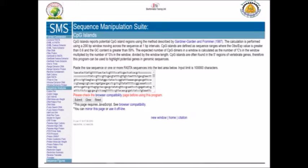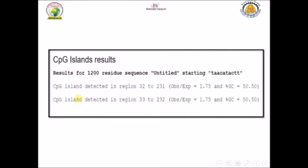The program is very simple — you can just copy and paste your sequence in FASTA format or as a raw format and put it in the submission box. By pressing submit you will get the result immediately. The result will contain the region that contains a CpG island with an observation/expectation value more than 0.6 and GC content more than 50%.